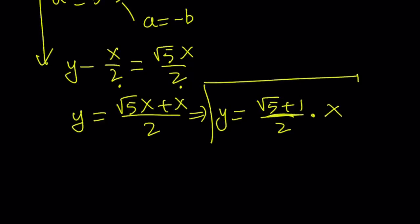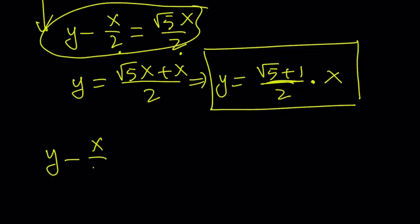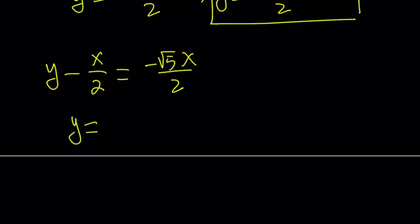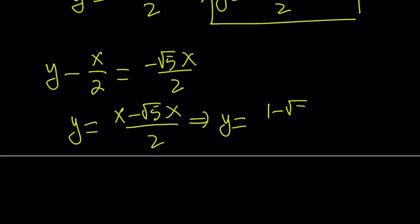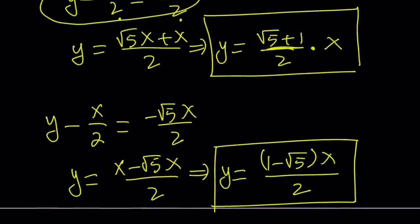So we were able to write one of the solutions: y in terms of x. For the second solution, we have y minus x over 2 equals negative root 5 times x over 2. Adding x over 2 to both sides gives x minus root 5 times x over 2, which equals 1 minus root 5, multiplied by x, divided by 2. So those are the two solutions from the first method, and notice that these are linear equations.